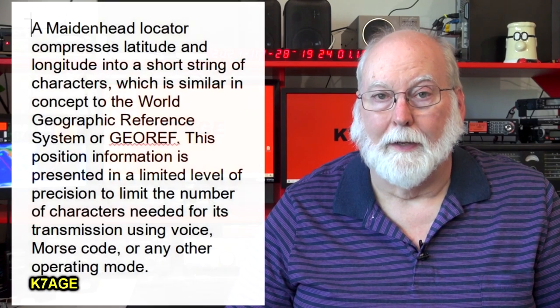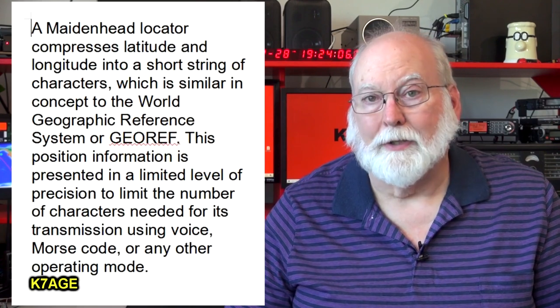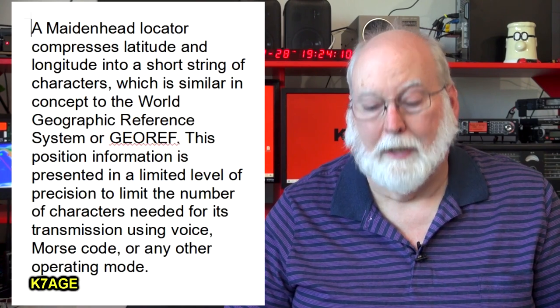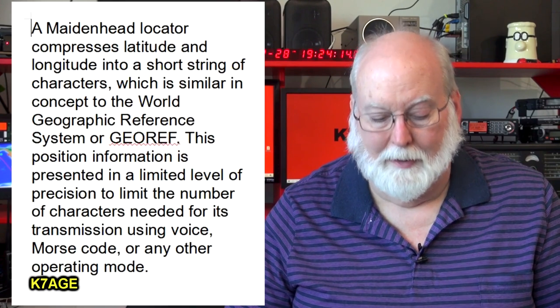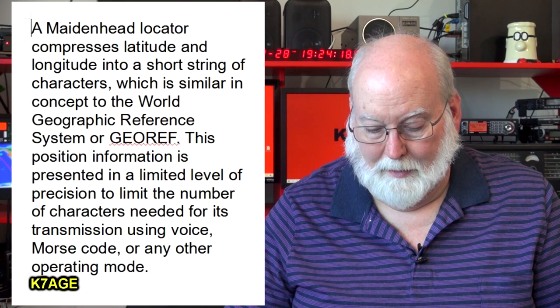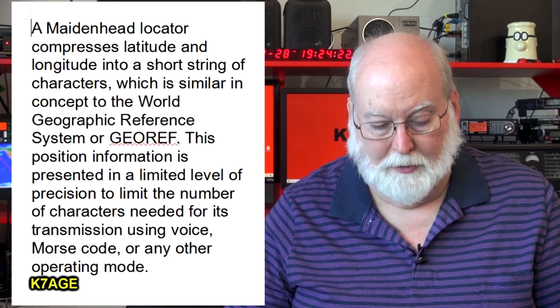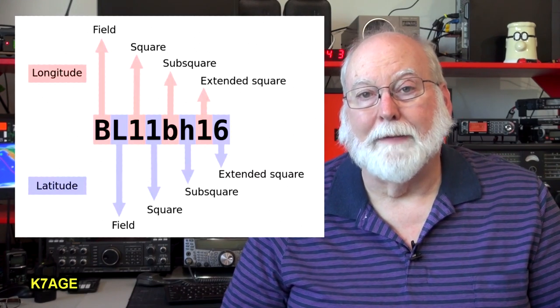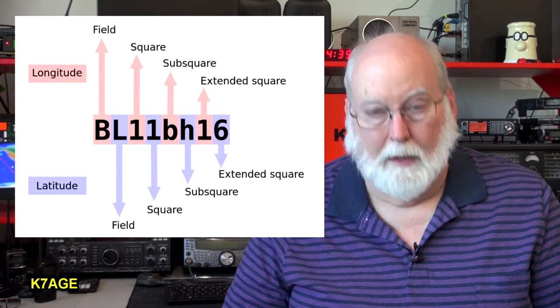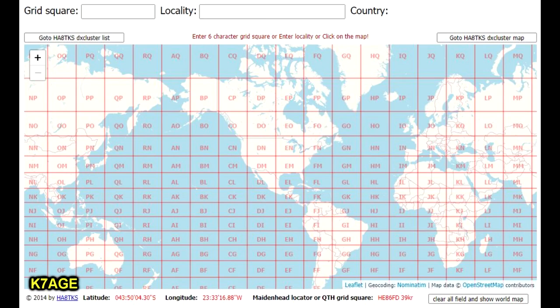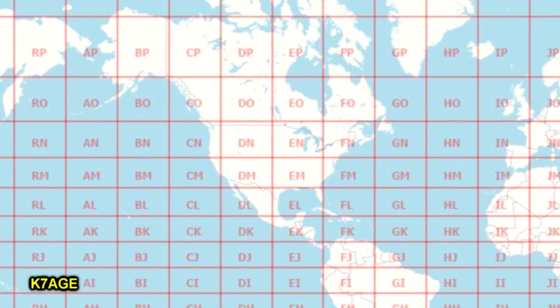I mentioned grid squares a moment ago, so let's dig more into that because we use it a lot in amateur radio. From Wikipedia: a Maidenhead locator compresses latitude and longitude into short strings of characters. This position information is presented in a limited level of precision to limit the number of characters needed for transmission using voice, Morse code, or any other operating mode. The notation is in pairs of characters — like my grid is CN72. The CN are the first two letters of the field for my area, which is a rectangle based on 20 degrees of longitude by 10 degrees of latitude.